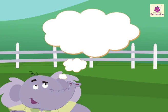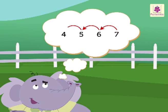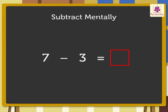Let's take another example: seven minus three. First, think of the number seven, then count three steps backward from seven: six, five, four. So we get the difference as four. Hence, seven minus three is equal to four.